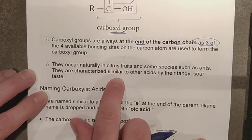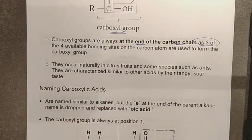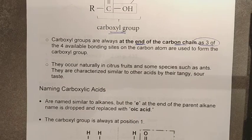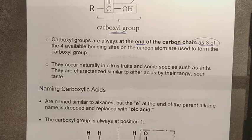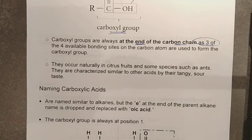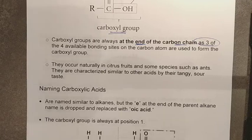Where do we see carboxylic acids? These are generally naturally occurring — found in things like citrus fruits, which is why they have that sour taste. Some species of ants and other insects use them as part of their defense mechanisms, saliva, or stings. Just like any other acids, they are characterized by producing a low pH in solution and a tangy, sour taste.